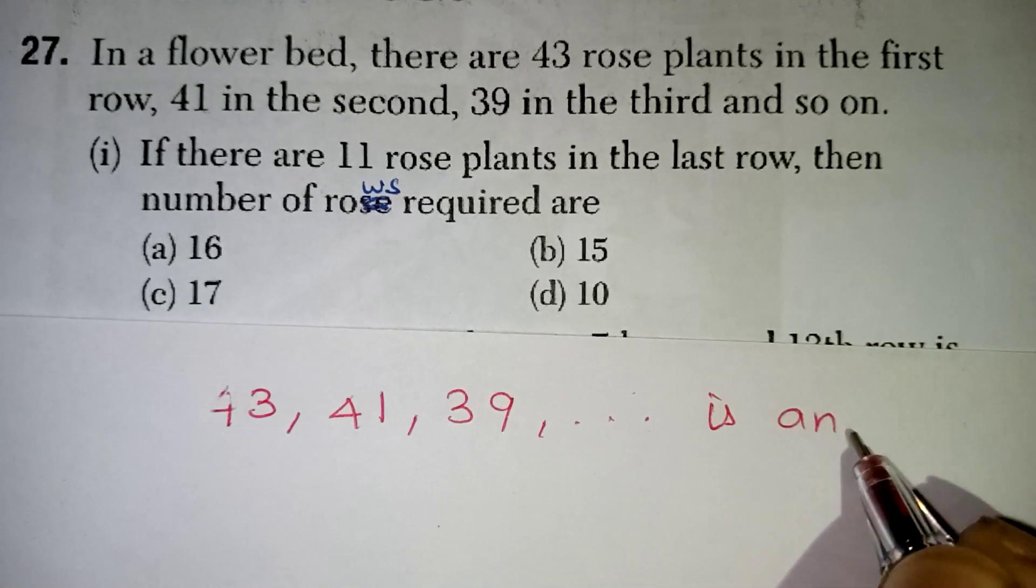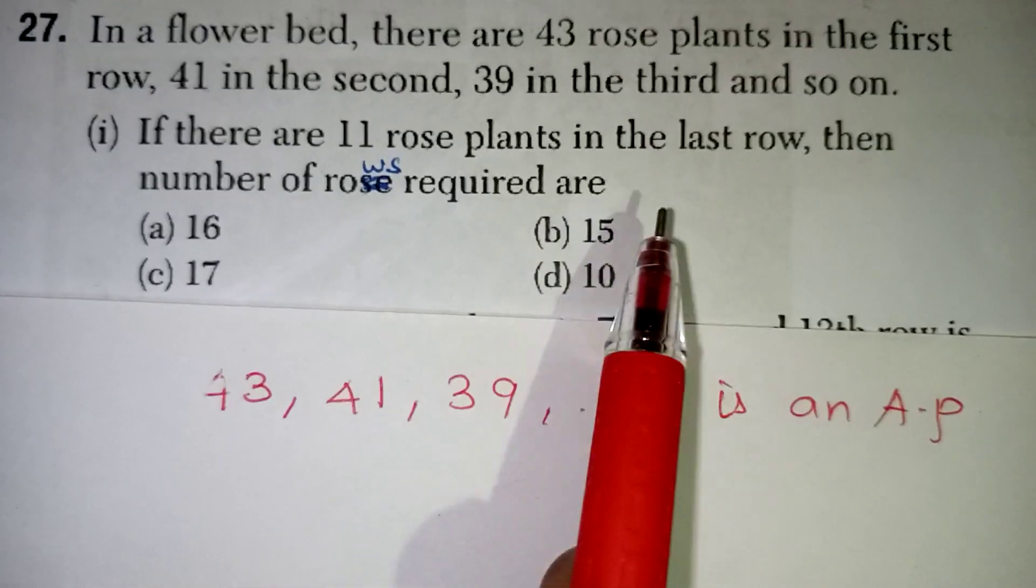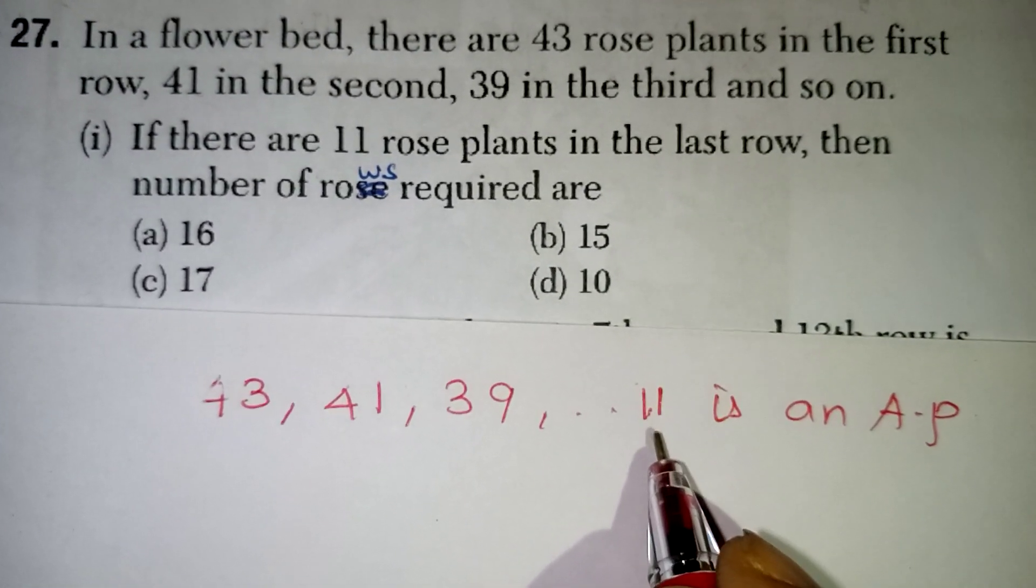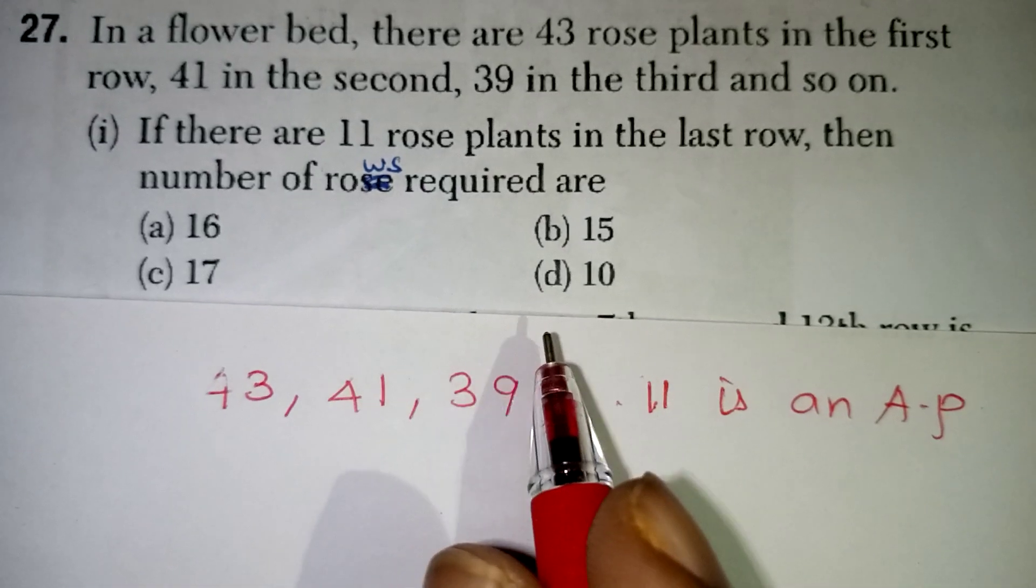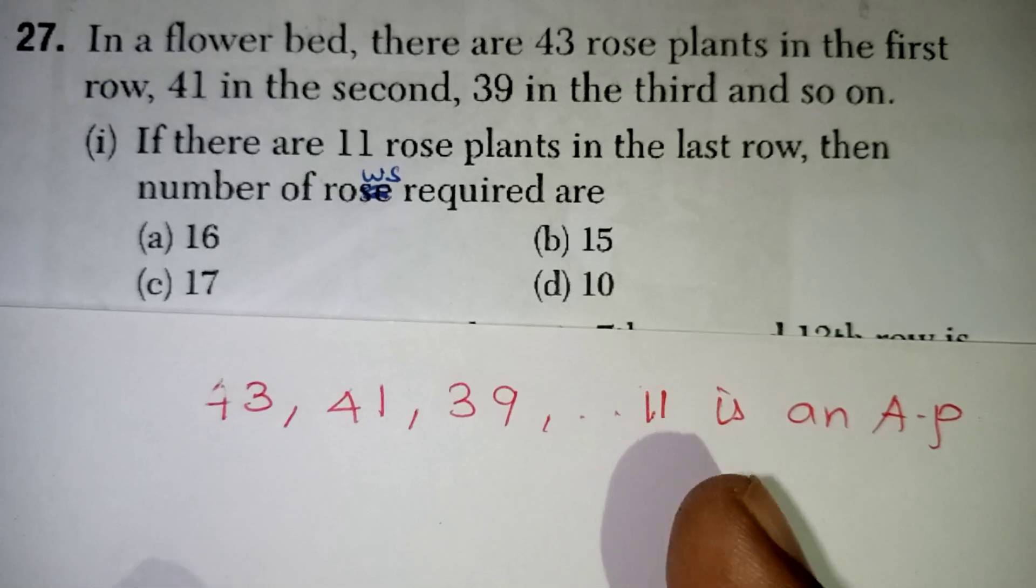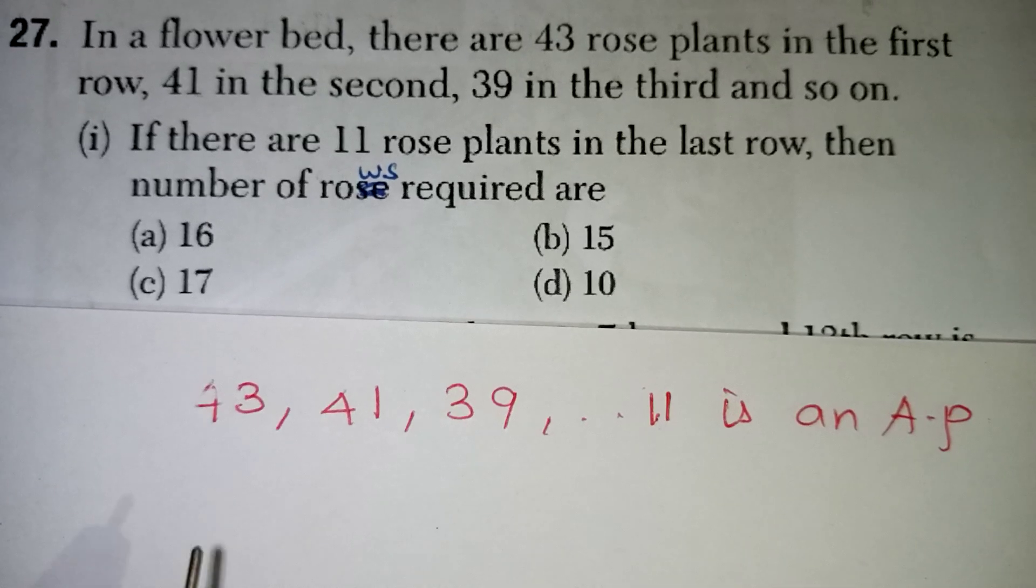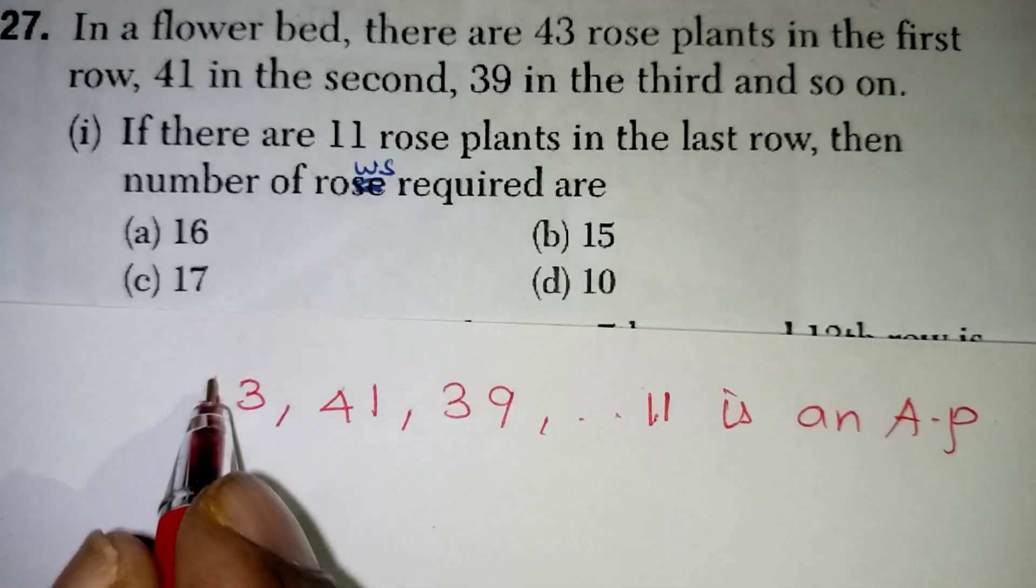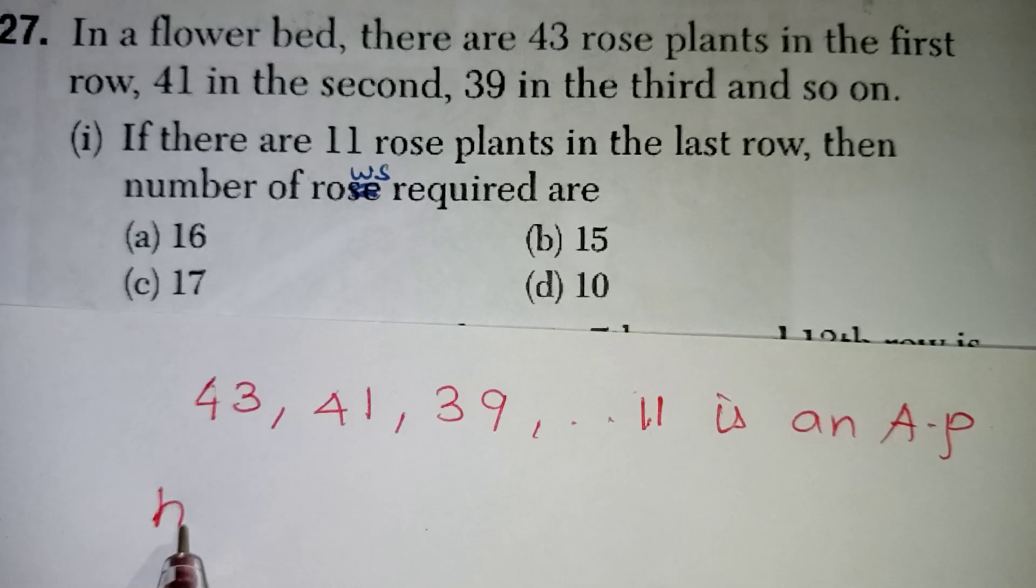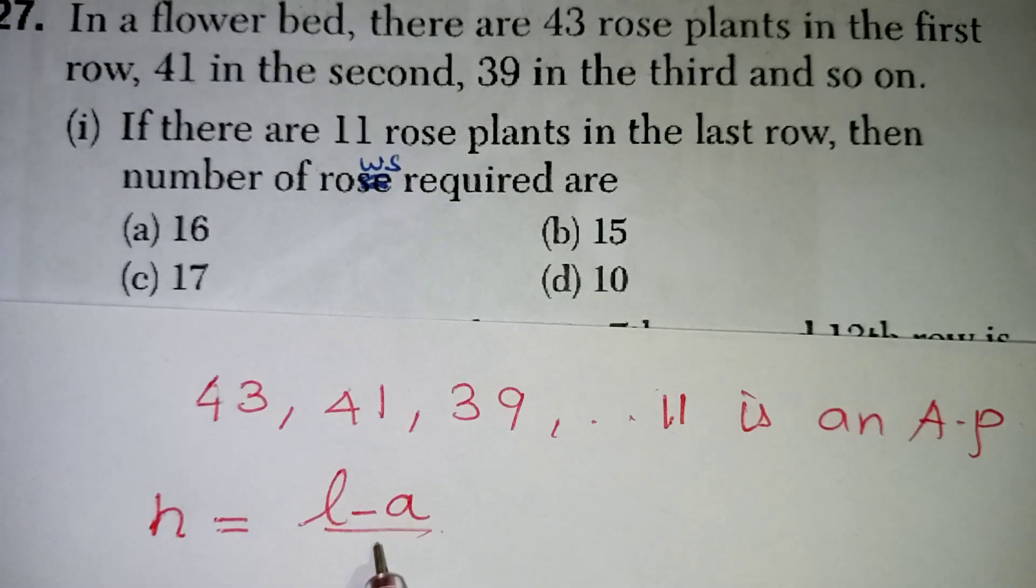Now if there are 11 rose plants in the last row, the number of roses required. So if the last row consists of only 11 plants, how many roses will be there they are asking. So number of roses is the question. How many terms are there? That is our question. So number of terms, n is equal to L minus A by D plus 1. We have a formula for this.